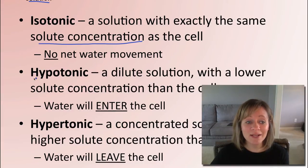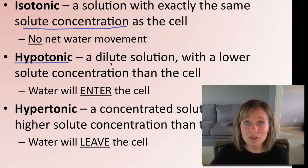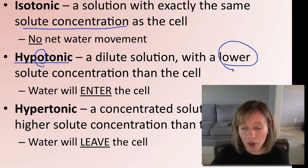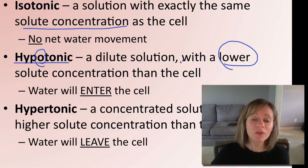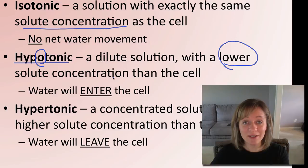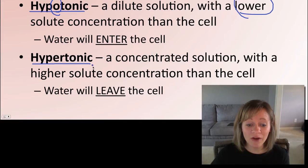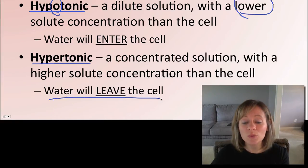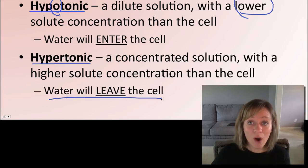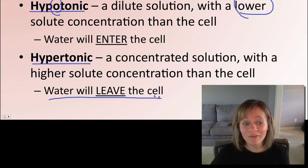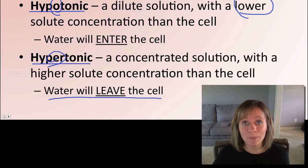If the external environment is hypotonic, that is a very dilute solution — it has lower solute concentration. I remember it: hypo means lower. Therefore, water is going to enter the cell, going from high water outside to low water inside. The last situation is when the external environment is hypertonic — a concentrated solution with a lot of solute. Water will follow that solute and leave the cell, going from high water inside to low water outside. Remember: hyper — if you're hyper, you have a lot of energy — well, there's a lot of solute in a hypertonic solution.